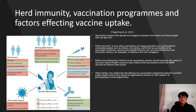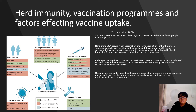Before permitting their children to be vaccinated, parents should examine the safety of vaccines. Recent health concerns have linked some vaccinations such as the MMR vaccine to illnesses like autism. Every year, the NHS vaccinates specific adult groups like the disabled and immunocompromised. Adults, however, may find it difficult to get to hospital due to employment or other commitments. As a result, the pharmacist's role has been broadened to include administering vaccines in local pharmacies, making vaccine uptake more accessible and likely.